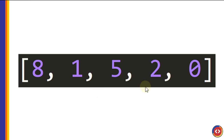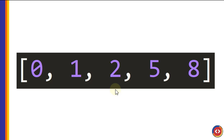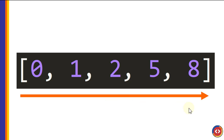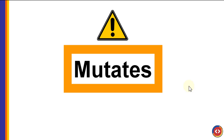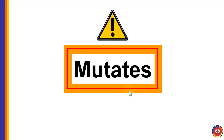We might take a list in Python with no particular order and transform it into a sorted list where the smallest element is first and the largest is last. You do have to be careful when you apply this algorithm in Python because it mutates the list — it changes the original list in memory because it doesn't create a copy.